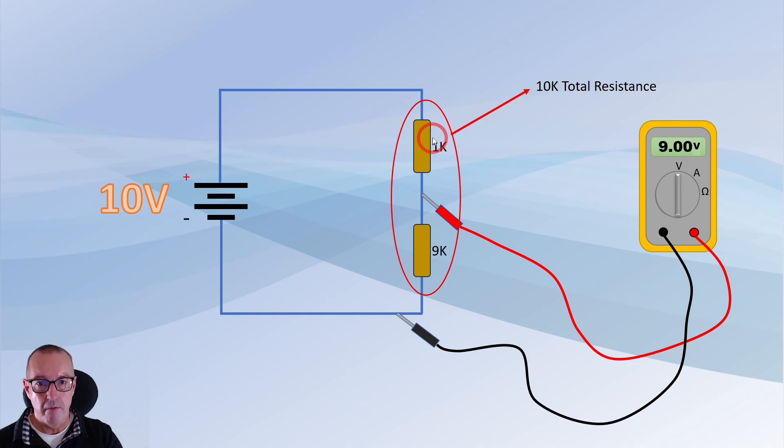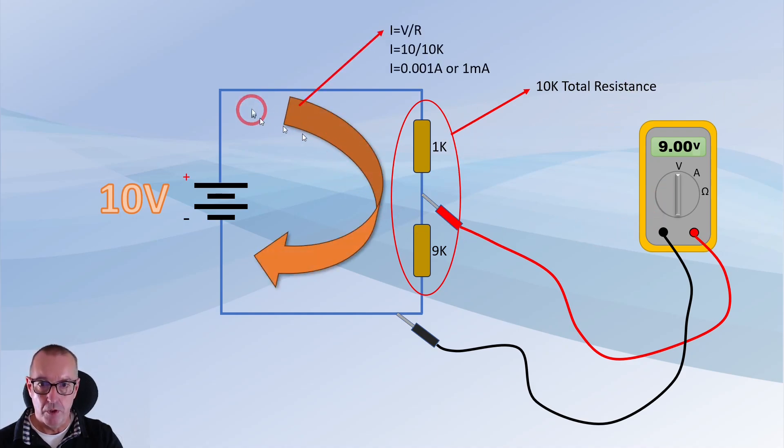So what's happening? Well if you look at the total resistance here that is going to be 10k because these are in series and 9 and 1 is 10k and then that means your current flowing through this circuit is 1 milliamp. This is basic Ohm's law so 10 volts divided by 10k resistance that's 1 milliamp current flowing around here. That means there's 1 milliamp flying through this resistor there's 1 milliamp flying through that resistor as well.